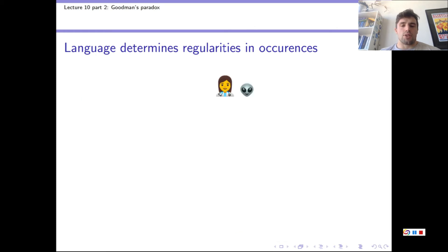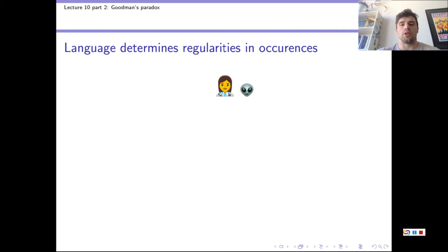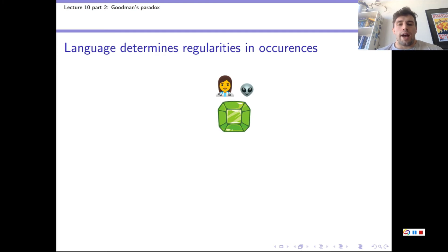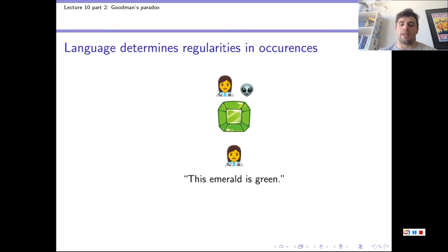Next, suppose we have a regular human gem expert and an alien gem expert too. The time is one minute to midnight on the 31st of December 2099 — right before 2100. We give them this gemstone; it's an emerald. Because the alien word grue refers to the same colour that we describe as green, our human gem expert would say 'this emerald is green,' and the alien expert would say 'this emerald is grue.' These are both basic colour words in their respective languages.